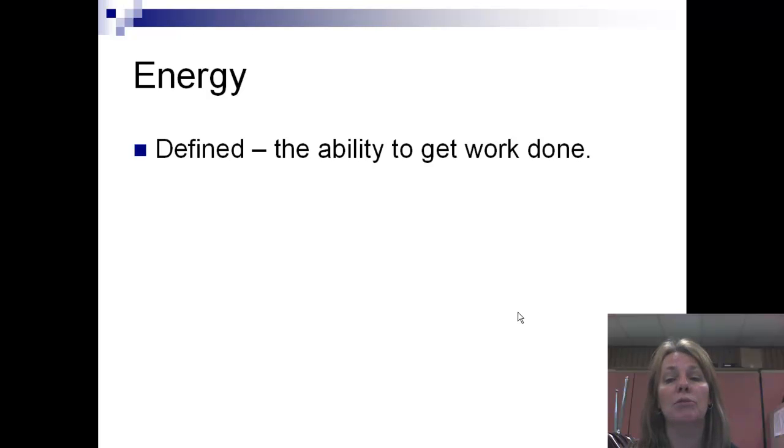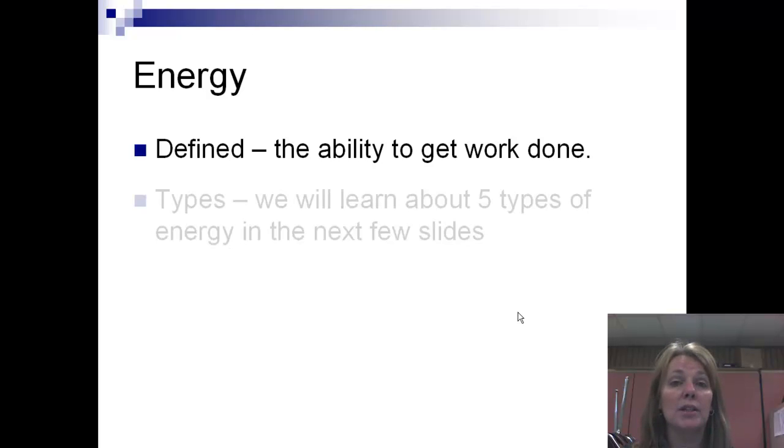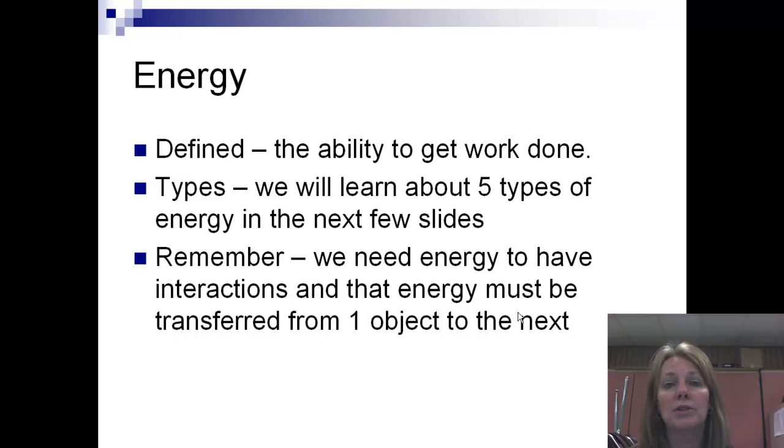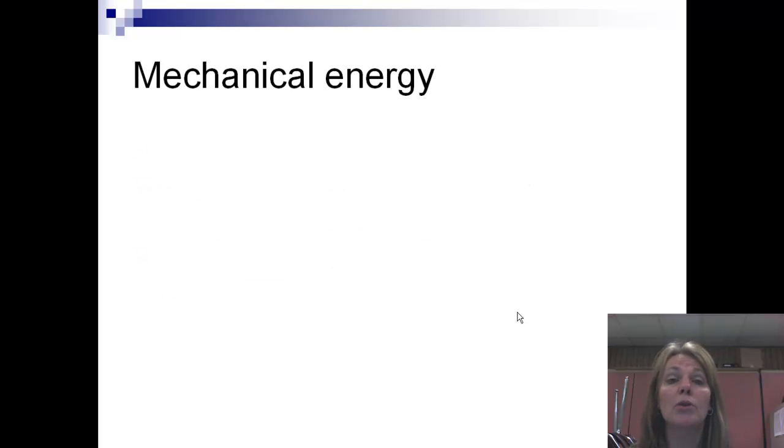So now what does that have to do with energy? Well energy is the ability to get work done. So I've got to have energy to have any kind of an interaction. If I want to transfer energy I've got to interact. So we're going to learn about five types of energies in the next few slides that we have. What I really want you to remember, and that's your next question, it says what should I remember about the connection between energy and interaction is that we need energy to have interactions. And that energy must be transferred from one object to the next. And that's going to cause our motion to change. We're going to either increase in speed or we're going to decrease in speed.